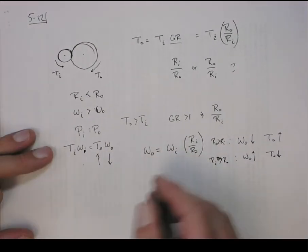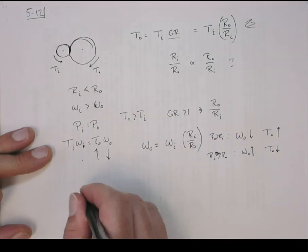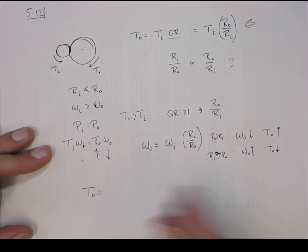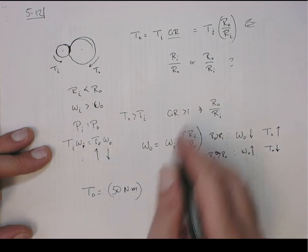So this problem is solved just by looking at this equation. So the output torque is going to be the input torque, which is 50 newton meters, times the gear ratio.